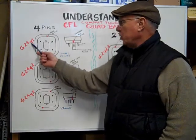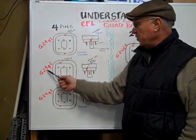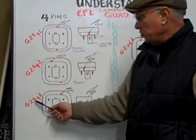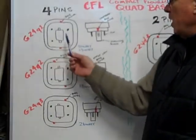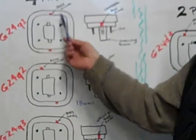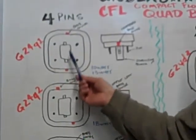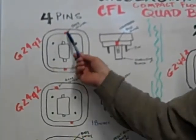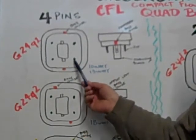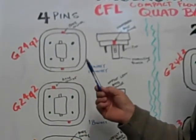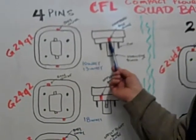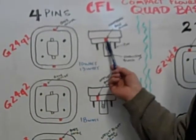The G24Q1, the G24Q2, the G24Q3. The Q1 has the base guide centered on the base. It has four pins and a stabilizing block in the center so that the base guide is centered.